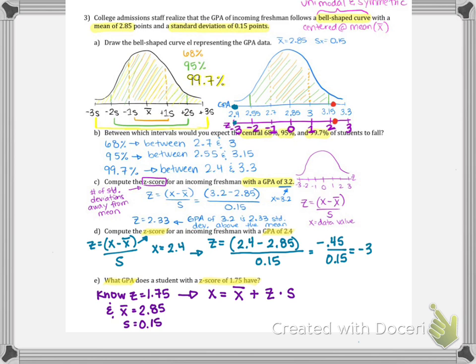Our Z-score that they gave us was 1.75. Our X bar is 2.85 and S is 0.15. So we would have X equals 2.85 plus, and then we take our Z-score, 1.75, and multiply it by the S value of 0.15. And if you do that all at once in your calculator, then you will see that this student has a GPA of 3.1125.